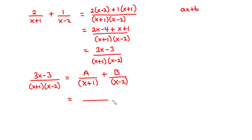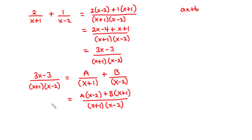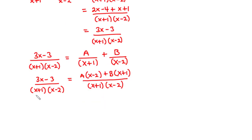The LCM between x plus 1 and x minus 2 is x plus 1 times x minus 2. Dividing by x plus 1 gives x minus 2, so we have A times x minus 2. Dividing by x minus 2 gives x plus 1, so B times x plus 1. This equals 3x minus 3 divided by x plus 1 times x minus 2. Since the denominator is the same, we equate the numerators: 3x minus 3 equals A times x minus 2 plus B times x plus 1.